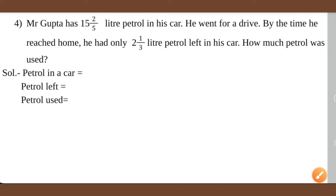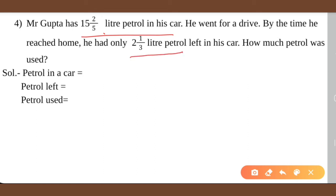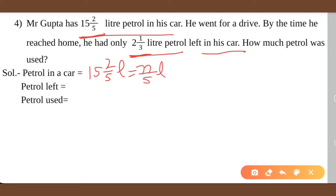Now question number 4: Mr. Gupta has 15 and 2 by 5 liters of petrol in his car. He went for a drive and by the time he reached home, he had only 2 and 1 by 3 liters of petrol left. He started with more than 15 liters, and after the drive only 2 and 1 by 3 liters remained. How much petrol was used?